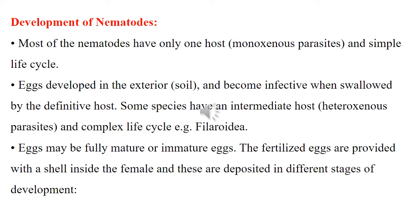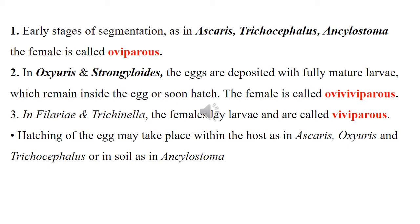Development of nematodes: most nematodes have only one host — monoxenous parasites with a simple life cycle. Eggs develop in the exterior soil and become infective when swallowed by the definitive host. Some species have an intermediate host — heteroxenous parasites — and a complex life cycle, as in filaroids. Eggs may be fully mature or immature. The fertilized eggs are provided with a shell and deposited in different stages of development. Eggs may be in early stages of segmentation, as in Ascaris, Trichuris, and Ankylostoma; the female is called oviparous.